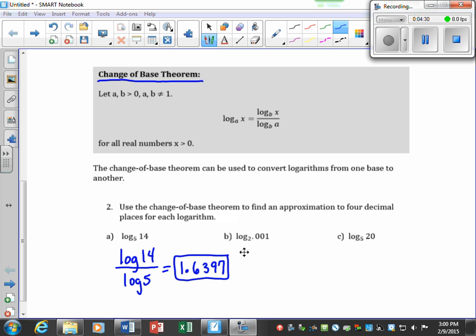Likewise, on part b, this is not a known base 10, so I must tell my calculator to calculate log of this divided by log of 2. We put that in the calculator, hit enter, and I get negative 9.9658. Your homework will probably tell you how many decimal places to round your values to when you input your answers.